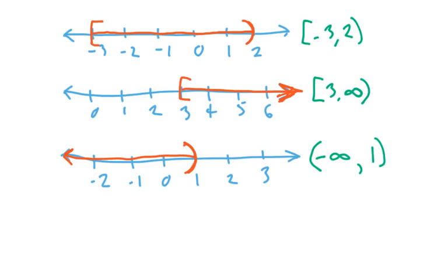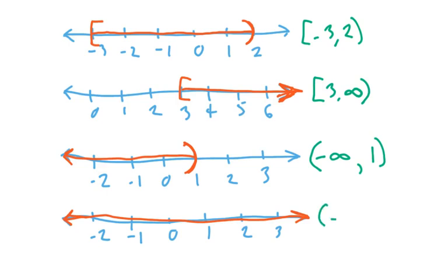I guess maybe one more just to finish things off. What if what you're interested in is all the numbers, all the way as far as you can imagine to the left, and all the way as far as you can imagine to the right, going forever in both directions? Well, the way we communicate that is we start at negative infinity on the left and we go all the way to positive infinity on the right. Again, infinities always get parentheses, so it would look like that. That would be the entire number line.